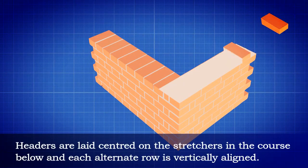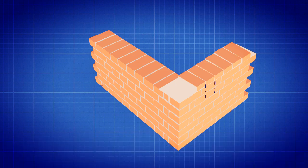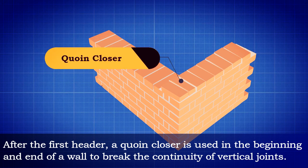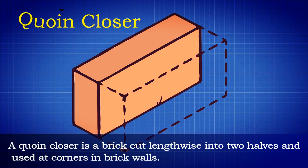Headers are laid centered on the stretchers in the course below, and each alternate row is vertically aligned. After the first header, a coin closer is used at the beginning and end of a wall to break the continuity of vertical joints. A coin closer is a brick cut lengthwise into two halves and used at corners in brick walls.